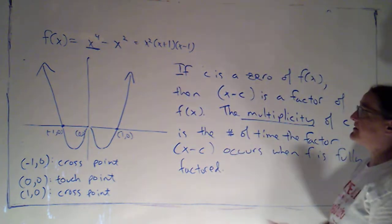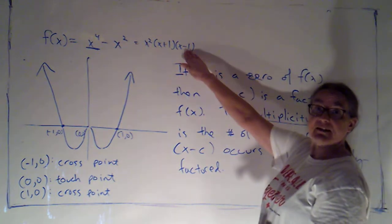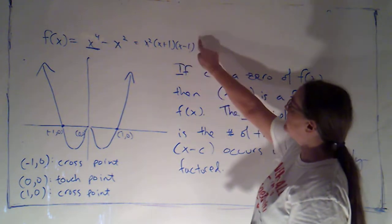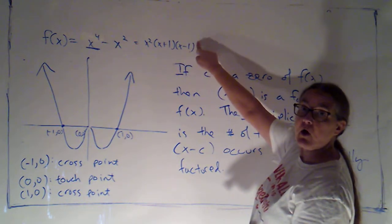One was a zero. The corresponding factor was x minus 1. That only occurred once. So, 1 had a multiplicity of 1.